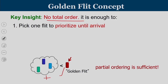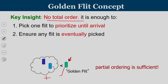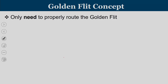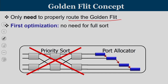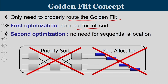A three-stage sorting network is not required for the golden flit concept. One flit is picked, and eventually all other flits will also be picked. Once the golden flit reaches its destination, from among the remaining flits the next one is picked as golden. This ensures that any flit is eventually picked and guaranteed progress. With the golden flit concept, we only need to properly route the golden flit — it will not be deflected. This eliminates the need for a priority sorting circuit and a port allocator. Two optimizations result: no need for a full sorting circuit, and we can go for parallel instead of sequential port allocation.